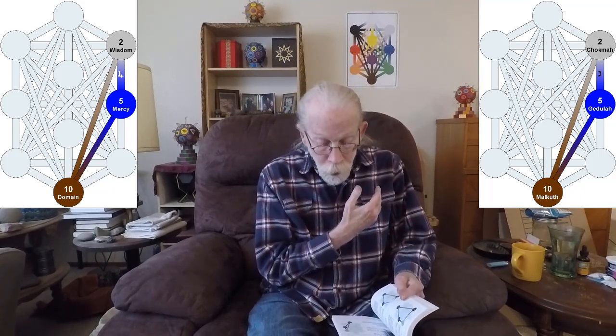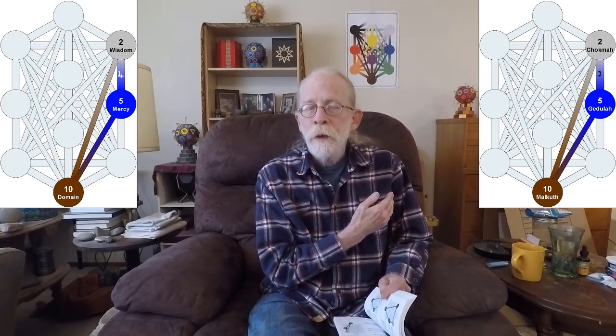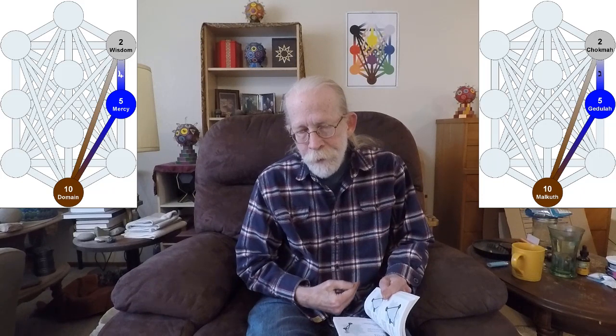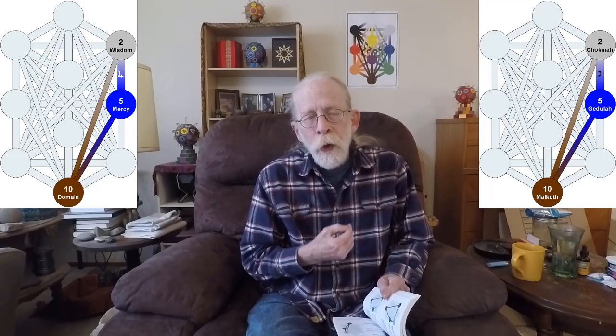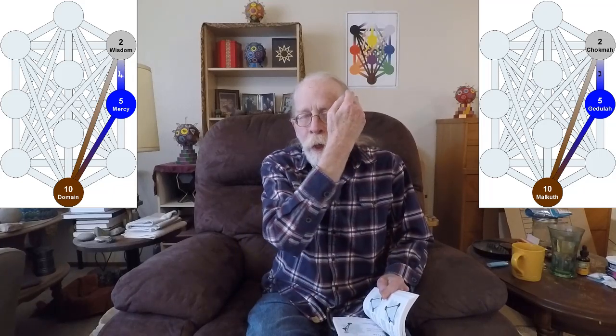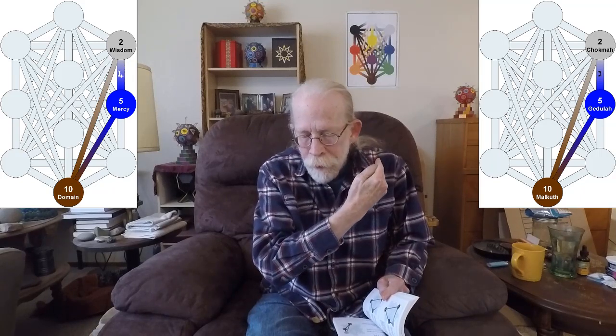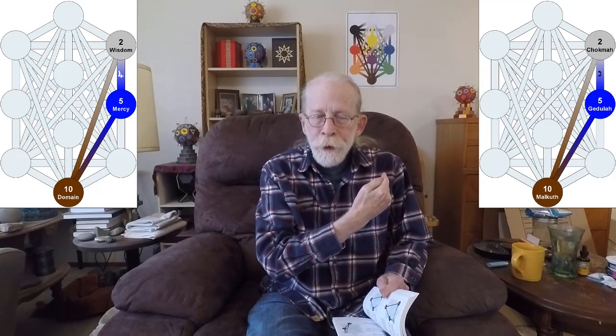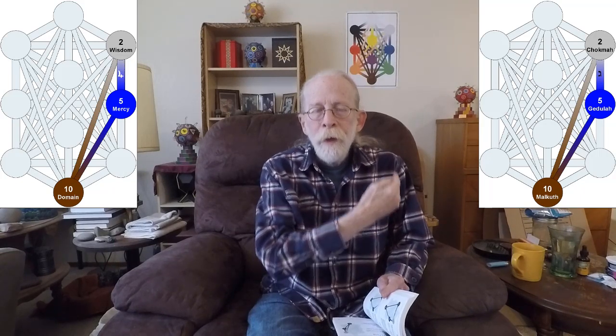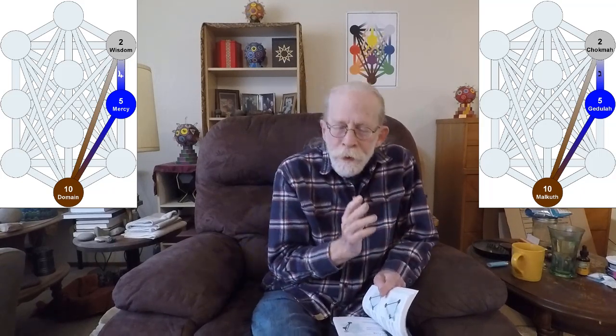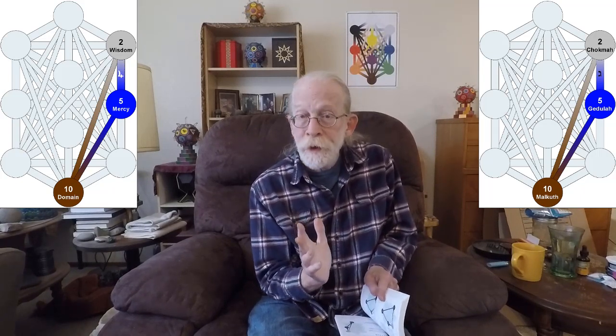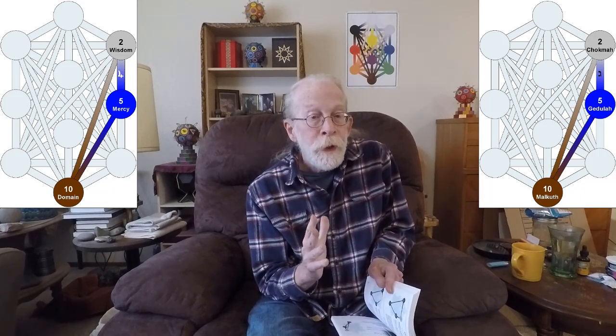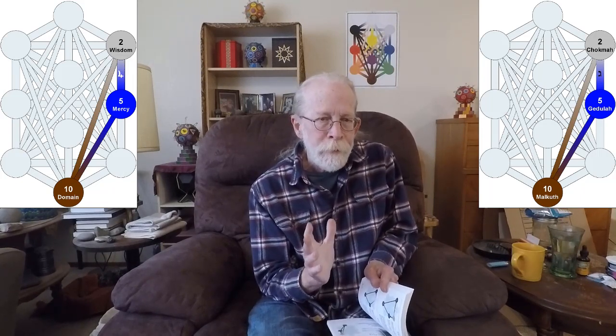So this is gate 118, and it starts in Gedjula, passes down that hidden path to Malkuth, up that hidden path from Malkuth all the way to Chokmah, and then down Gimel and Jupiter to Gedjula, and then back around. So this is a kind of scrunched-in gate, and really shows the intimate nature of the relationship between these two factors, these very personal factors. They're incarnational-only factors.